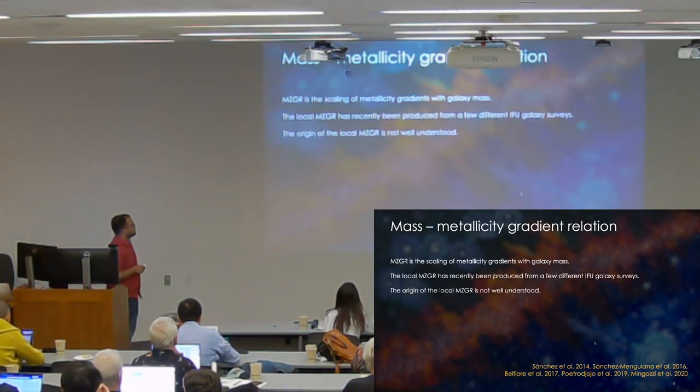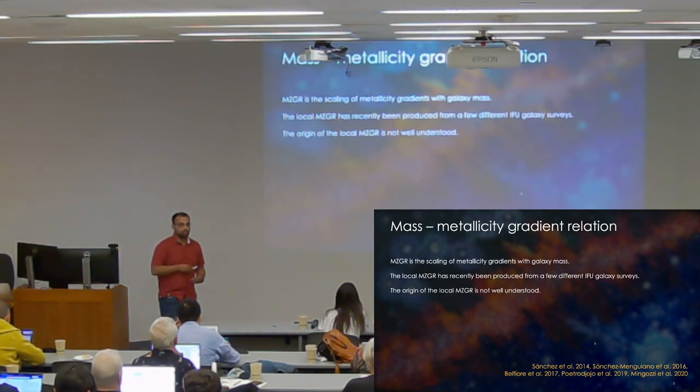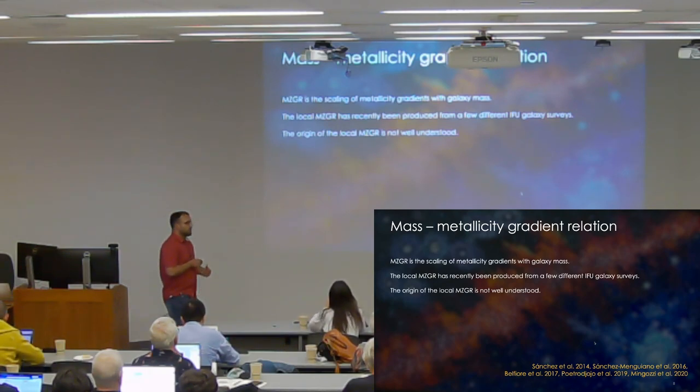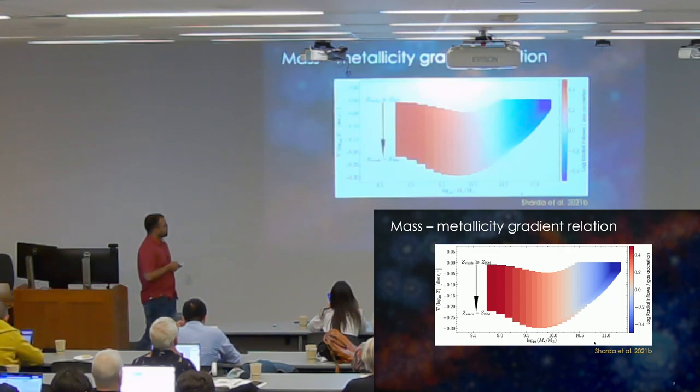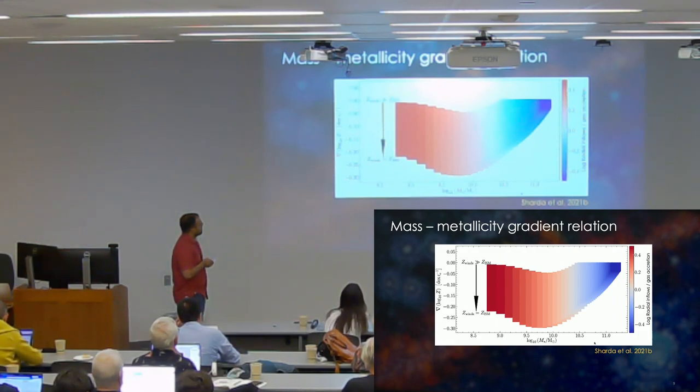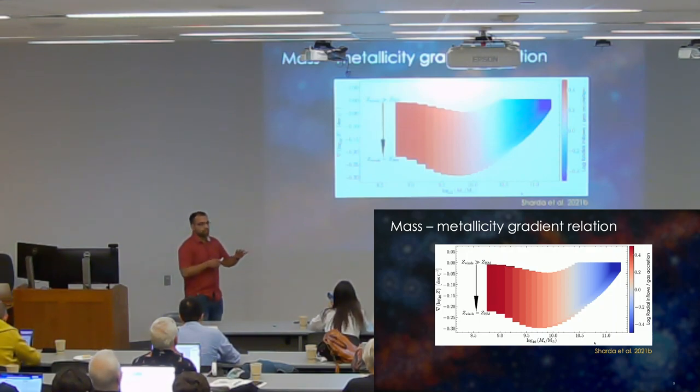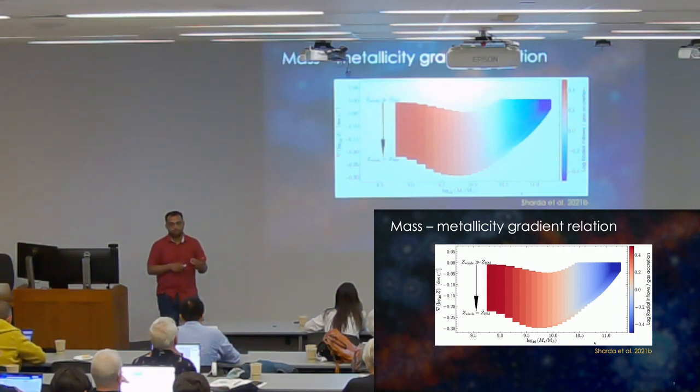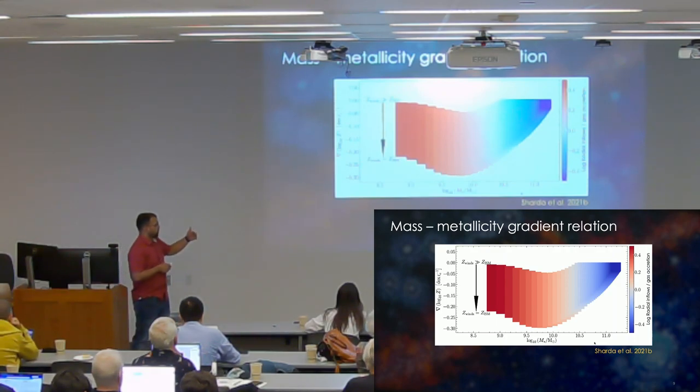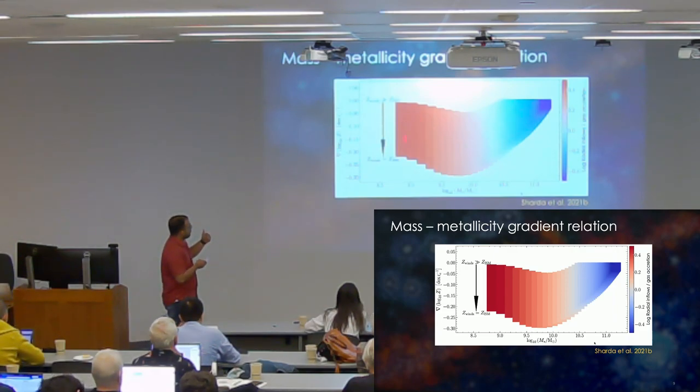So the first thing that I wanted to quickly touch upon is the so-called mass-metallicity gradient relation. So this is just the resolved form of the MZR. And it has been produced very recently from a few different IFU surveys, so SAMI, Khalifa, Manga. And we are still trying to figure out the origin of this MZGR. So I'll show you the results from the model first. And this is where the parameter space of the model lies. So the x-axis is just the stellar mass. This is all at redshift zero. The y-axis is the metallicity gradients. And this is where the parameter space models predict metallicity gradients should lie as a function of galaxy mass. The color bar is a ratio of two processes that try and redistribute metals or dilute the metallicity overall. So accretion of gas or radial gas flows, for example.